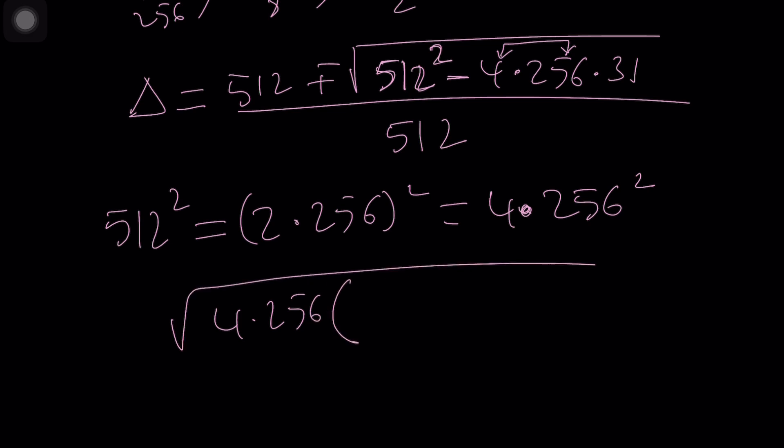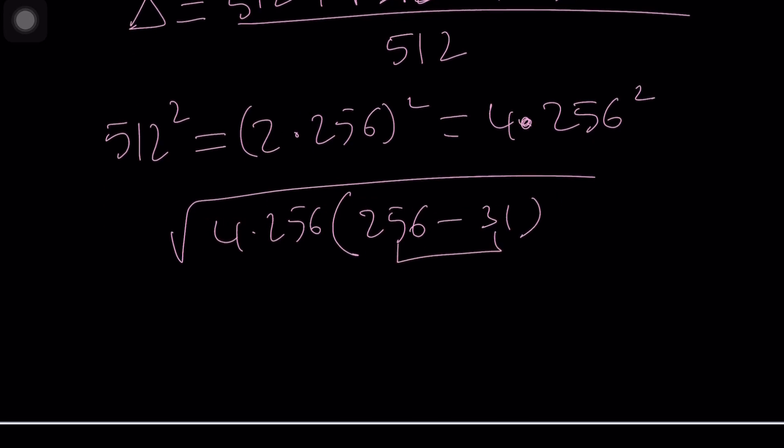So I can factor out 4 times 256 here inside the radical of course and inside I'm going to have 256 minus 31. That was easy and this will be 225. How beautiful is that, right? 225 by the way happens to be 15 squared.